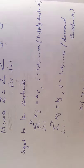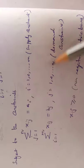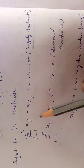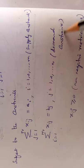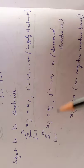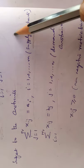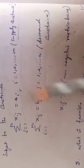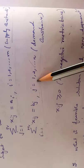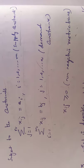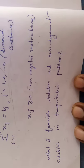Subject to the constraints: first is the supply constraint — Σ (j=1 to n) x_ij = a_i, for i = 1 to m. If demand is given row-wise, supply is given column-wise. The demand constraint is Σ (i=1 to m) x_ij = b_j, for j = 1 to n. Finally, the non-negativity restriction: x_ij ≥ 0. This is the complete mathematical formulation of a transportation problem.